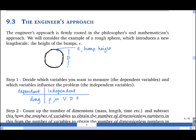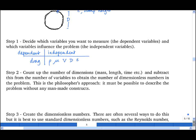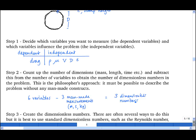Now count up the number of dimensions and subtract this from the total number of variables. In this case there are six variables, and there are three man-made measurements: meters, seconds, and kilograms. That means there will be three dimensionless numbers in this problem.